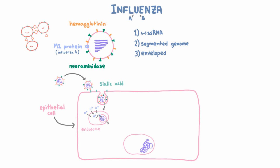Next, the genetic material goes to the nucleus. Remember, it's a negative-stranded RNA, and you can't do much with that — you need the positive strand to make proteins. But there's no human enzyme that can create a positive-stranded RNA from a negative-stranded RNA. So the virus actually brings in its own RNA-dependent RNA polymerase in every viral particle, which also travels to the nucleus and converts this negative RNA to positive RNA.